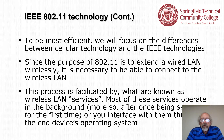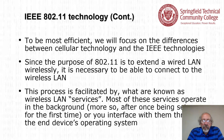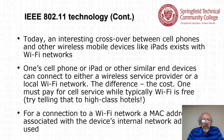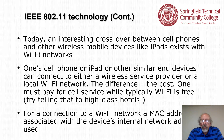To be most efficient, we will focus on the differences between cellular technology and the IEEE technologies. Since the purpose of 802.11 is to extend the wired LAN wirelessly, it is necessary to connect to the wireless LAN through what are known as wireless LAN services. Today, cell phones, iPads, and other wireless mobile devices can connect to either a wireless service provider or a local Wi-Fi network. The difference is the cost — one must pay for cell service while typically Wi-Fi is free.